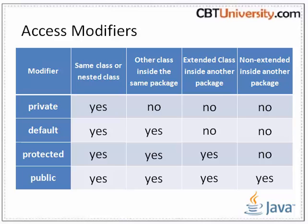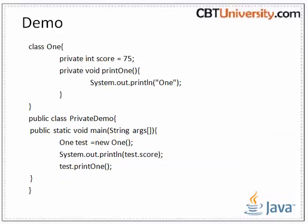The default modifier is accessible only within the package. The protected access modifier is accessible within the package and outside the package, and can be applied on data members, methods and constructors, but cannot be applied on the class. Public access modifier is accessible from everywhere, enabling everyone to use the functionality without any restrictions.